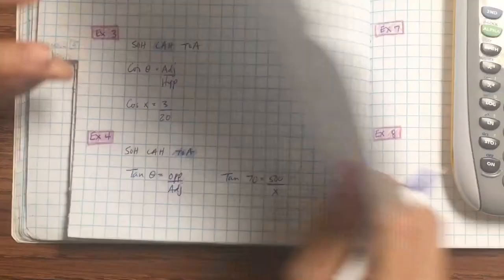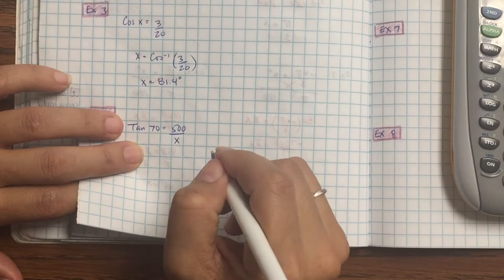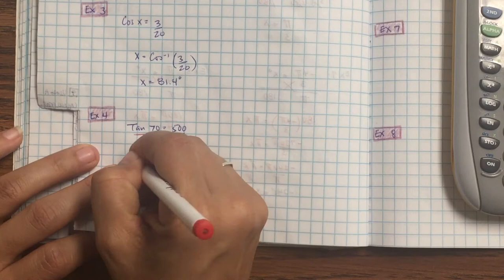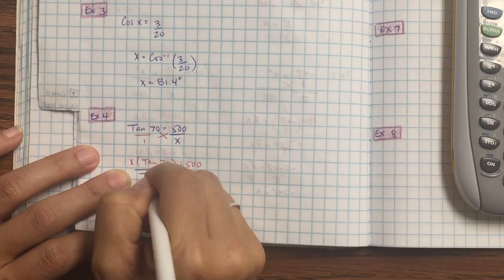Example 4, write it down. So 2 pages over, write it down. Tan 70 equals 500 over x. We're not looking for the angle, so we're going to put a fraction. Cross multiply and divide. So that's going to be x tan 70 equals 500 times 1, which is 500. And then divide. How do you get x by itself? Divide by tan 70. So divide both sides by tan 70. It's a listening check. Put a box around the answer for example 3, and color it in.